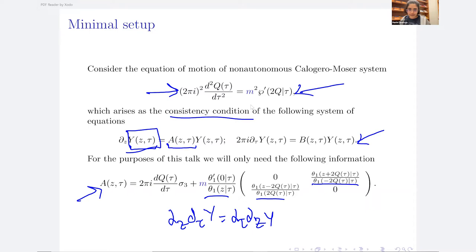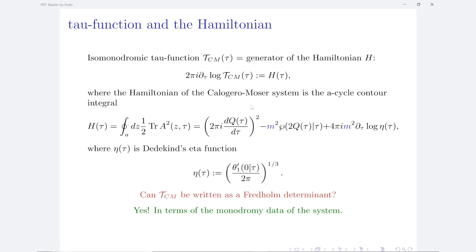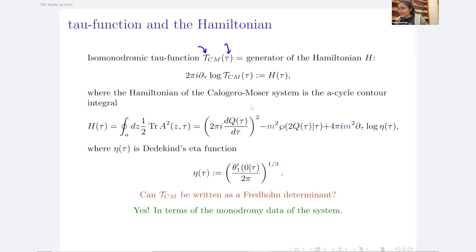There may be a slight confusion: I use tau for both the tau function and the modulus parameter. The small tau is the modular parameter and the capital Tau is the tau function. This is a particular problem when talking about a torus because tau is naturally the modular parameter but also the name of the tau function.